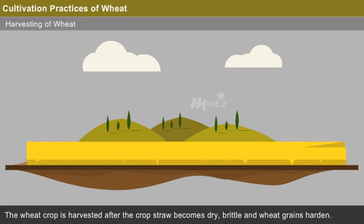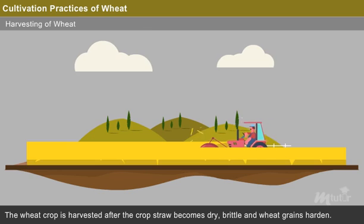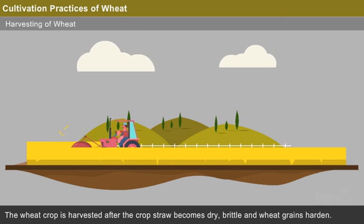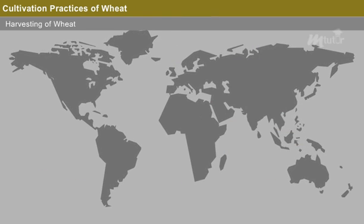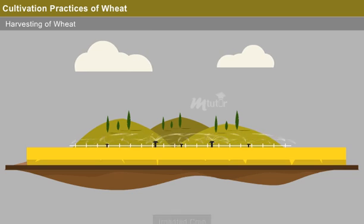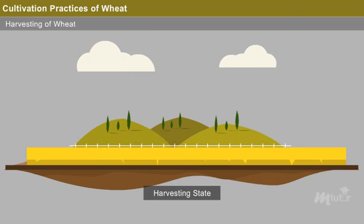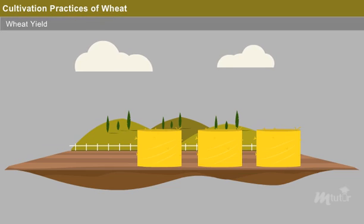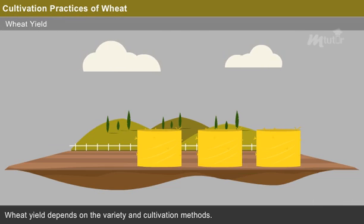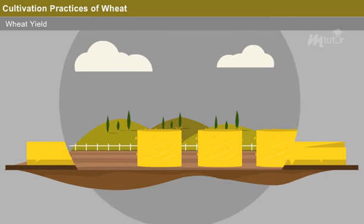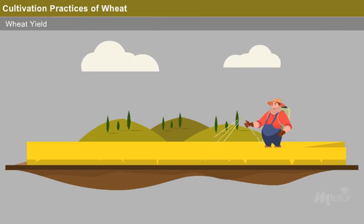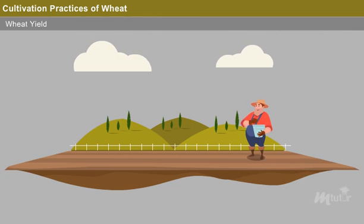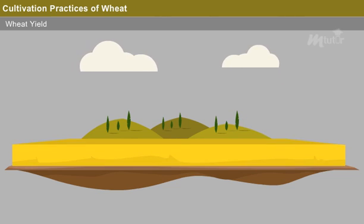Harvesting of Wheat: The wheat crop is harvested after the crop straw becomes dry and brittle, and when the wheat grains harden. The harvesting season varies from zone to zone. Compared to irrigated areas, rain-fed crops reach the harvesting stage much earlier. Wheat Yield: Wheat yield depends on the variety and cultivation methods. It can be increased by adding nitrogen and gypsum to the fields. Intensification of the wheat system can be brought about by sowing seeds on time and growing vegetable pea as a rotation crop.